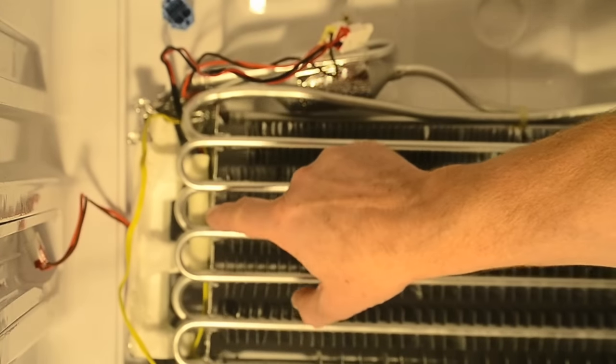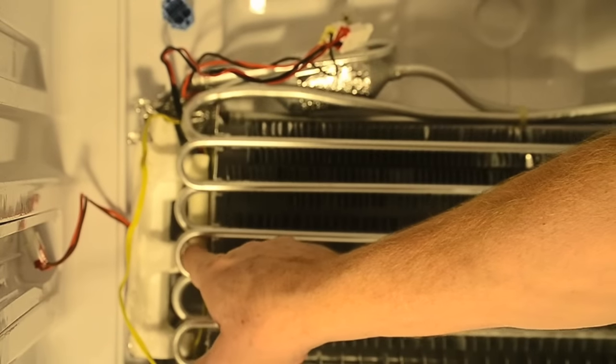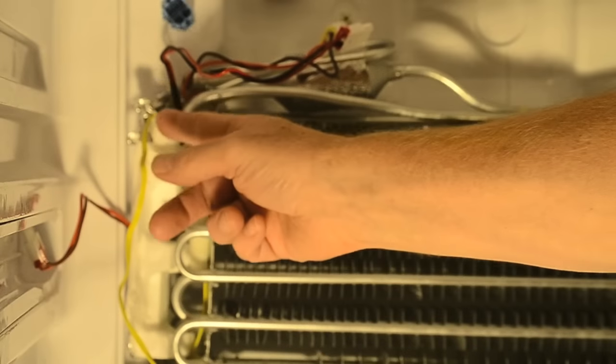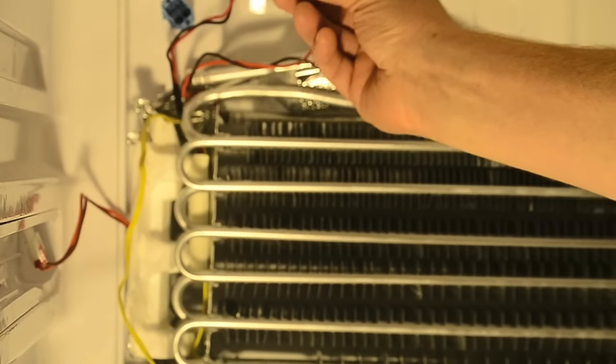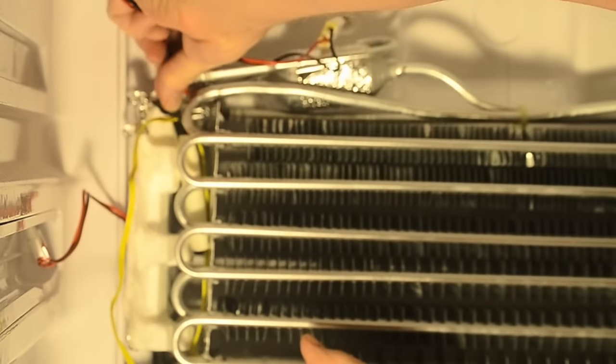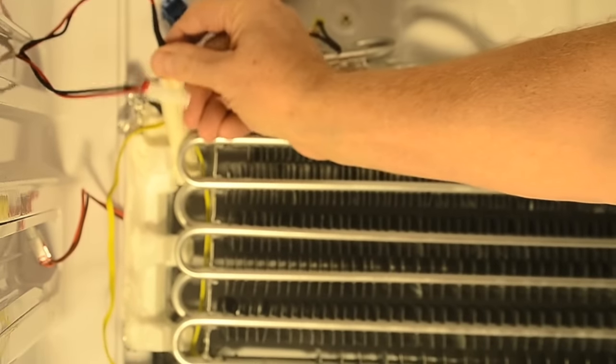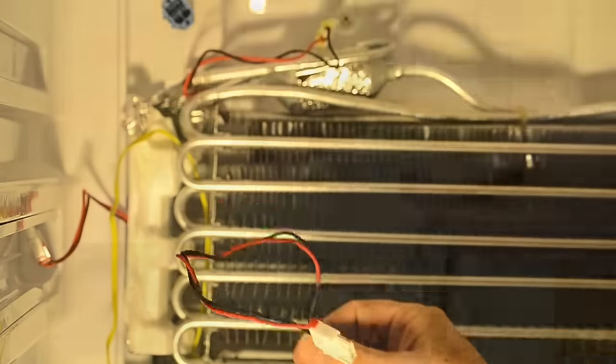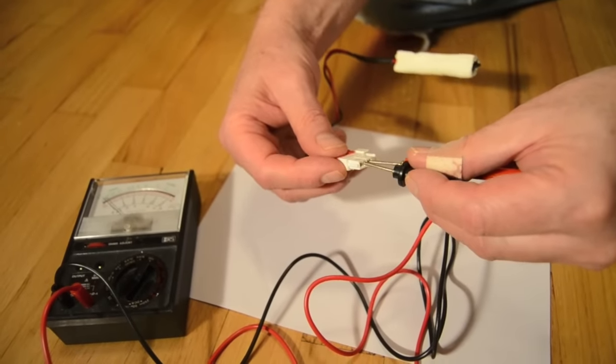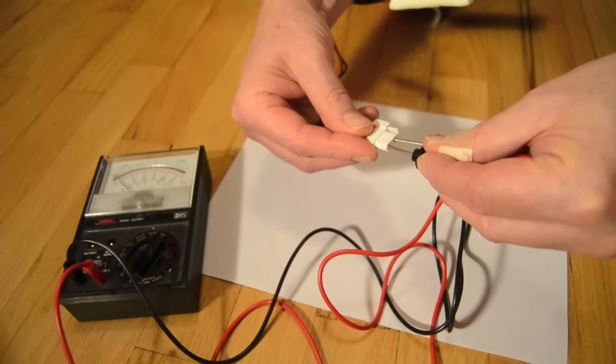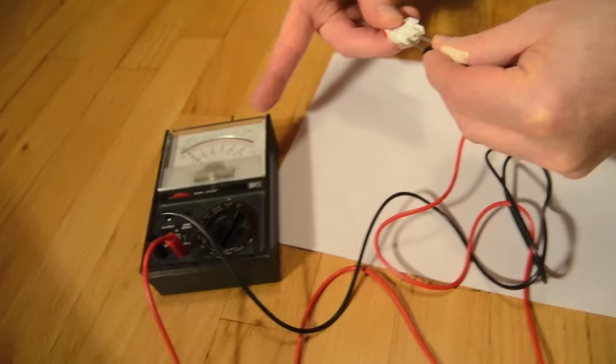This is the thermal fuse. After loosening the foam support along the side, pull the thermal fuse up through the coils and out. A check with my ohmmeter reveals that it has indeed gone bad. A good one will send the needle to zero on the right.